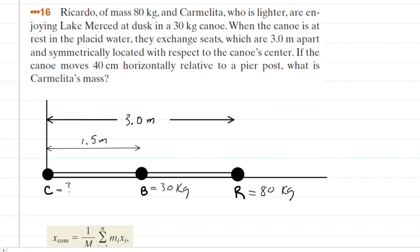In this question, we have two people sitting on a canoe, which we have called a boat, as represented by the letter B. And the individuals are sitting three meters apart. We have Carmelita sitting on the far left end of the boat, and then Ricardo on the far right end of the boat. And we have labeled the masses, respectively.